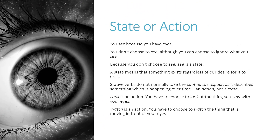You see because you have eyes. You do not choose to see, although you can choose to ignore what you see. Because you do not choose to see, see is a state — something that exists regardless of our desire for it to exist. Stative verbs do not normally take the continuous aspect, as it describes something happening over time, an action, not a state. Look is an action — you choose to look at the thing you saw. Watch is also an action — you choose to watch the thing that is moving.